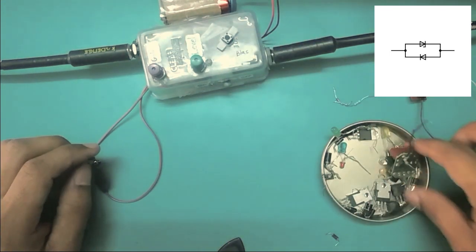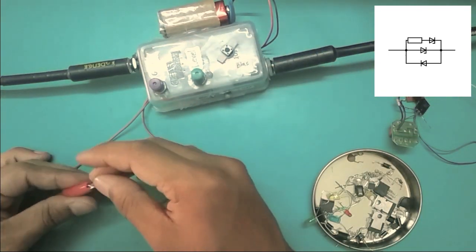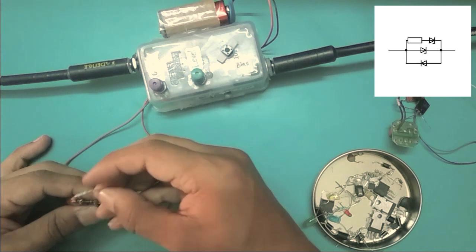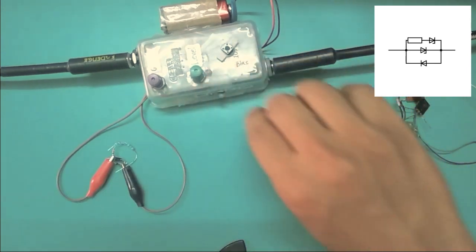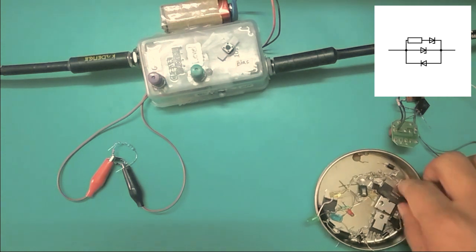And now two zener diodes and one rectifier diode, and one of the zener diodes has a resistor in series with it. I mean that's a usable sound.